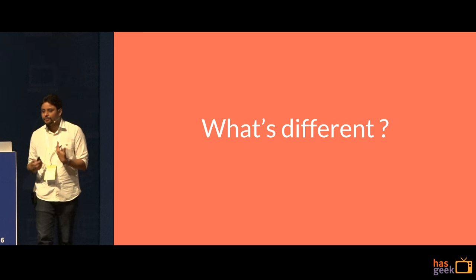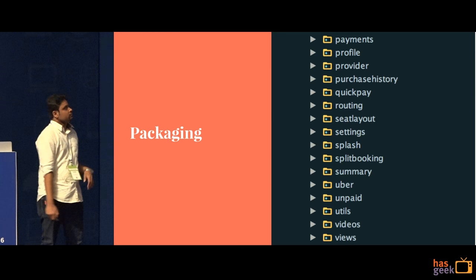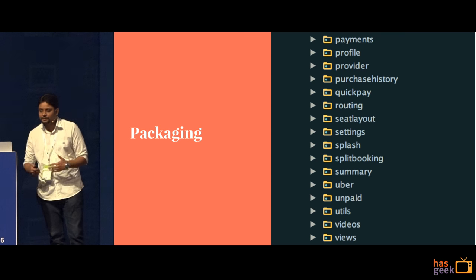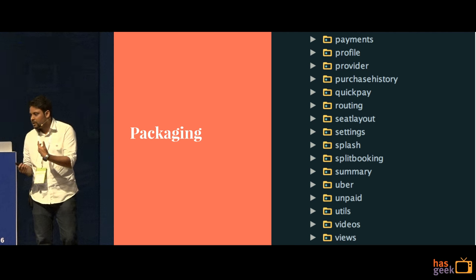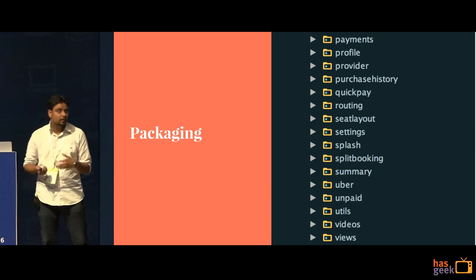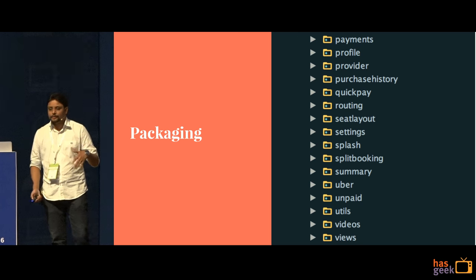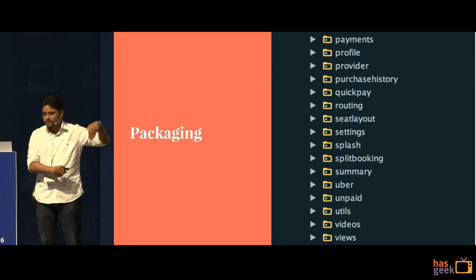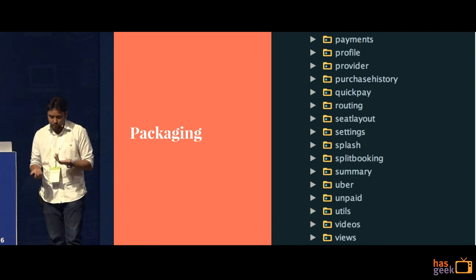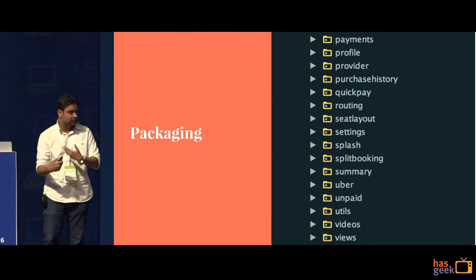We chose to do a few things differently from what you would have seen in the regular Android world. Packaging — the general approach has always been to club all your activities together, all your adapters together. What ends up happening is on an application at BookMyShow's scale, your activities package has like 300 classes and you have 200 adapters, so it becomes very hard — without a naming convention it's hard to know which adapter is used where, which makes debugging harder.